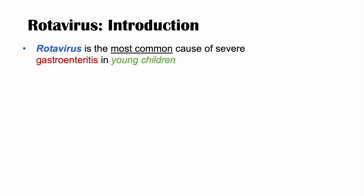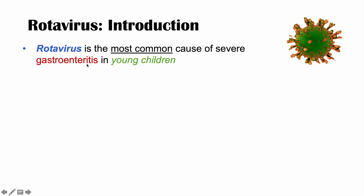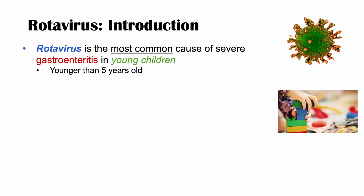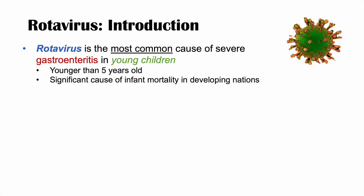Rotavirus is actually the most common cause of severe gastroenteritis in young children. Gastroenteritis — breaking that word down — 'itis' means inflammation, 'gastro' is stomach, and 'entero' refers to the intestines. So it's inflammation of the stomach and intestines. When I say young children, I mean younger than 5 years old. It's actually a significant cause of infant mortality in developing nations.